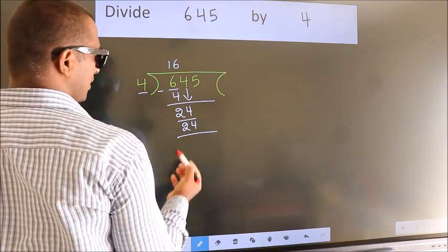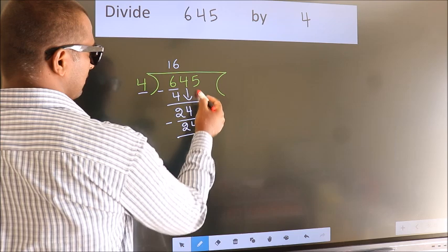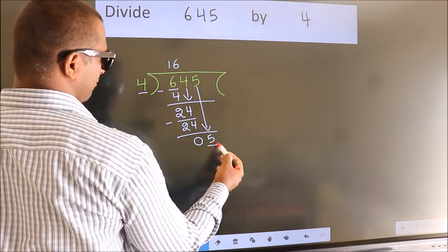Now, we subtract. We get 0. After this, bring down the beside number. So, 5 down. So, 5.